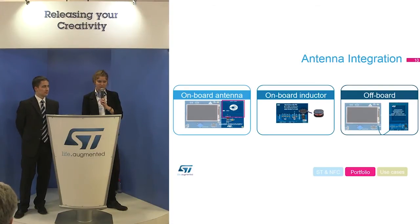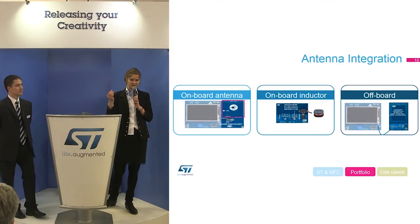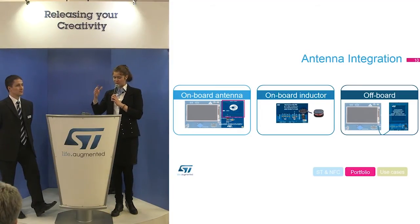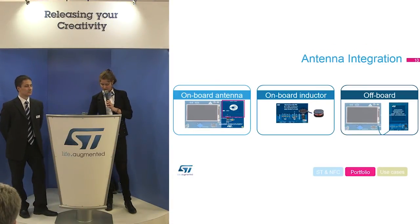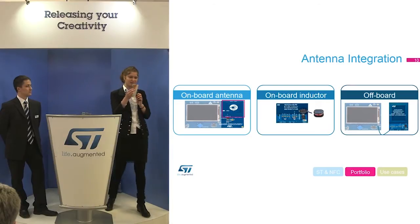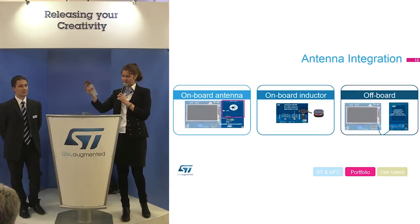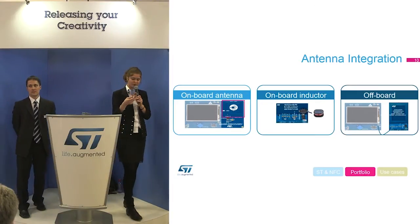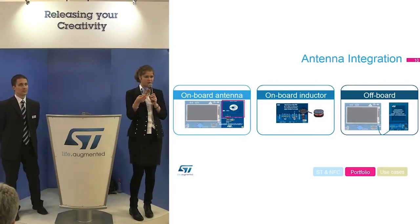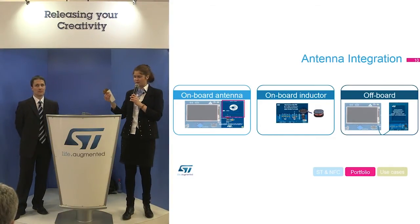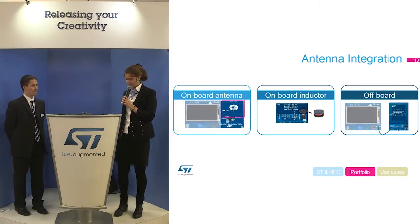The off-board antenna option uses a flexible PCB, but the only difference is that the chip won't be able to communicate when the antenna is not connected to the chip. That's the only constraint.